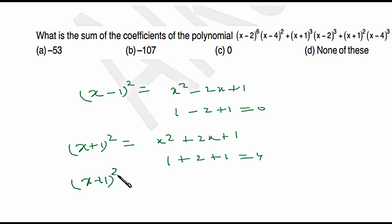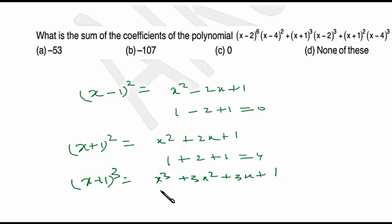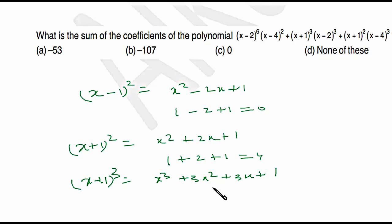For (x + 1)³, that is x³ + 3x² + 3x + 1. If I put x = 1, the sum of coefficients is 1 + 3 + 3 + 1 = 8.